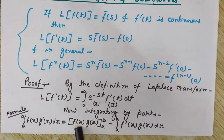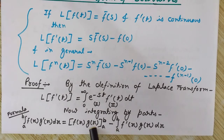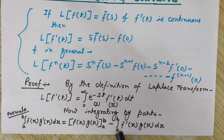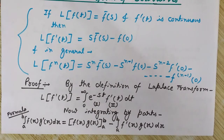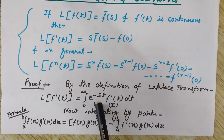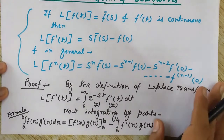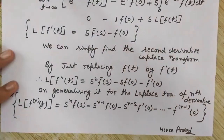Minus, from a to b, the differentiation of the first function multiplied by the integration of the second function, integrated over a to b with respect to x. This is the integration by parts formula. Now we treat e^(−st) as the first function and f'(t) as the second function.